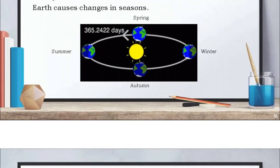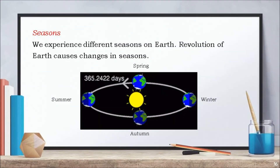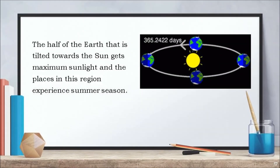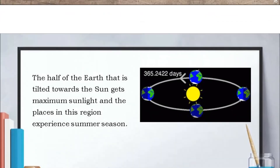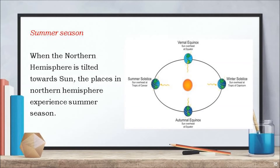Now let us see how seasons are caused. We experience different seasons on earth, and it is the revolution of earth around the sun that causes changes in seasons. As the earth revolves around the sun, the half of the earth that is tilted towards the sun gets maximum sunlight, and the places in this region experience summer season. When the northern hemisphere is tilted towards the sun, the places in the northern hemisphere experience summer season.